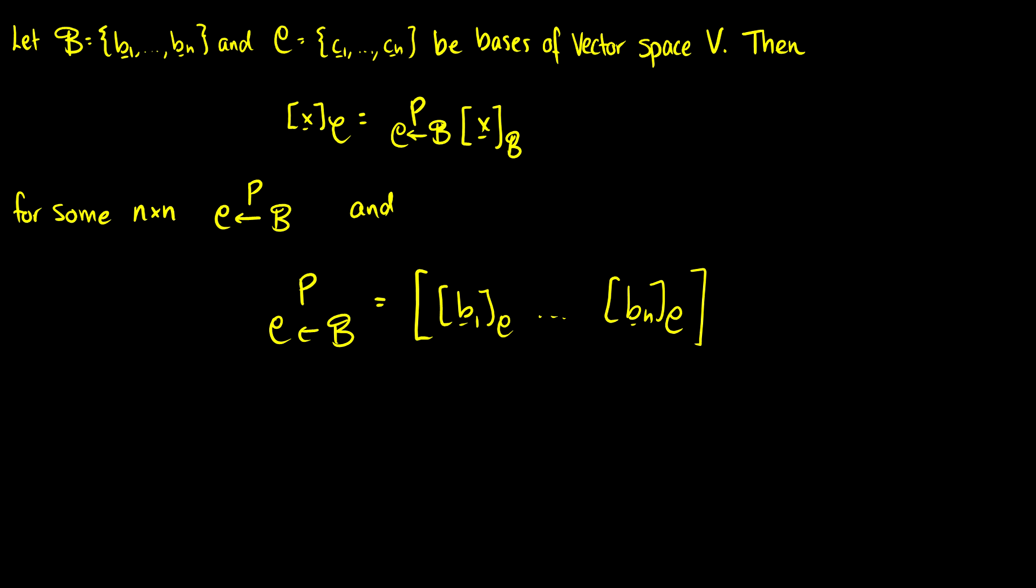Then we can write the vector x relative to C as the change of basis matrix times the vector x relative to B. So this change of basis matrix is going to be n by n, and what this says is it takes a vector relative to B and it maps it to a vector relative to C.